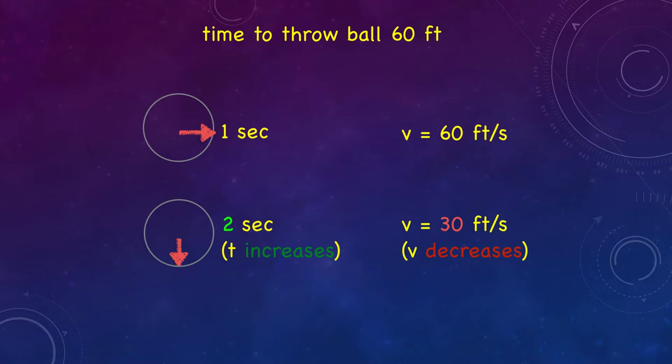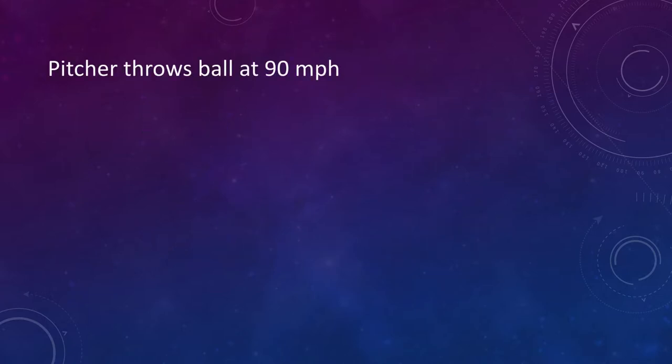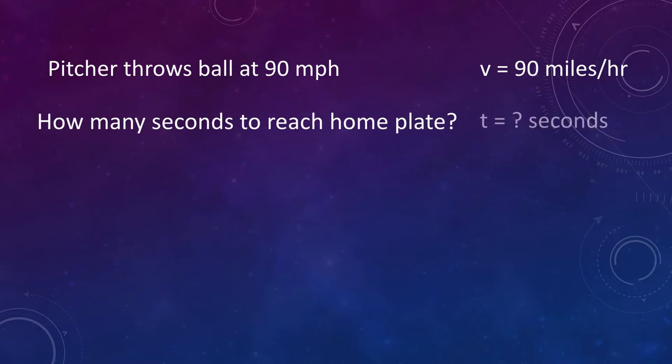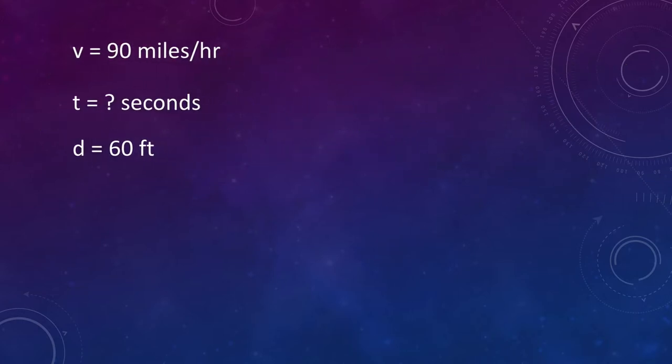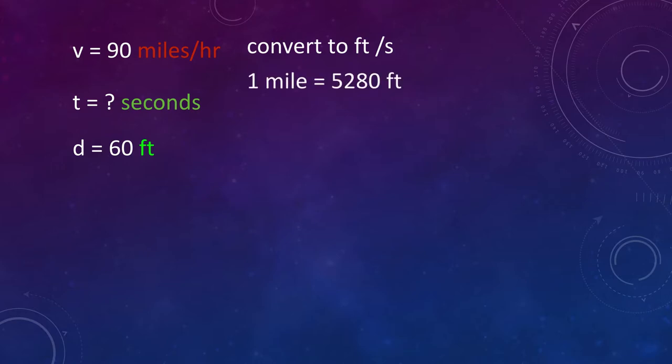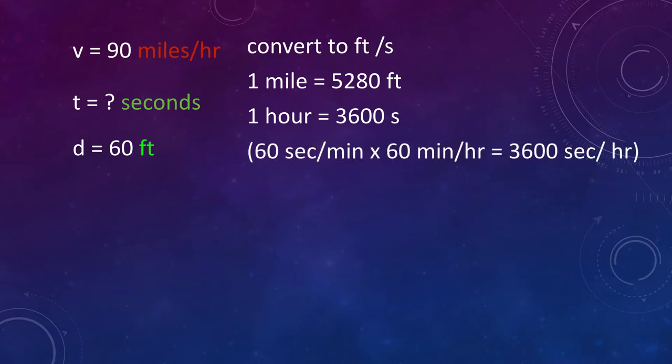Here's another example. If a pitcher throws a ball at 90 miles per hour, how many seconds does it take to reach home plate? We have the distance in feet, and we need an answer in seconds, so we need to convert miles per hour to feet per second. One mile equals 5,280 feet. One hour equals 3,600 seconds. 60 times 60 equals 3,600.